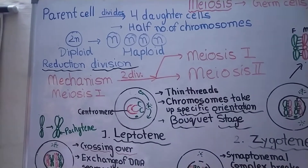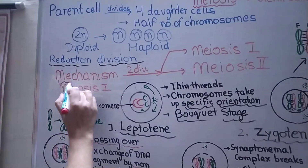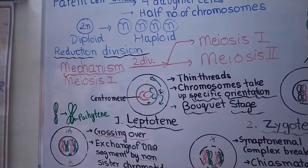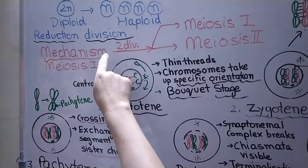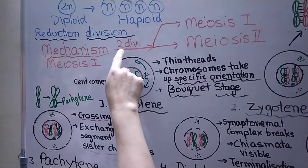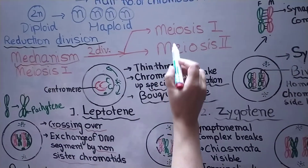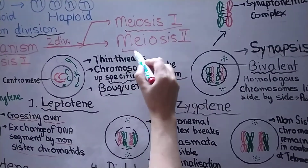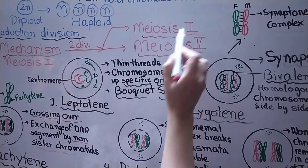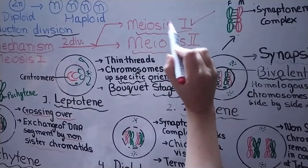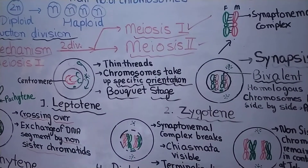Now we are going to learn about the mechanism of meiosis. In meiosis there are two divisions: first meiosis one, and then meiosis two. Today we are going to study meiosis one, and meiosis two I will cover in the next video.